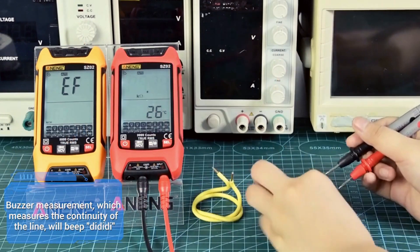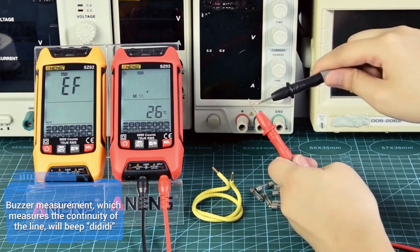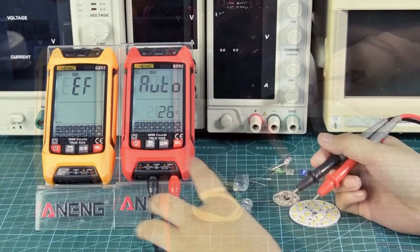The meter's automatic shutdown time of 15 minutes helps conserve battery life, while the fast sampling time of approximately 3 times per second provides real-time data.